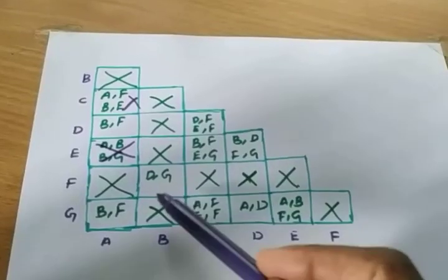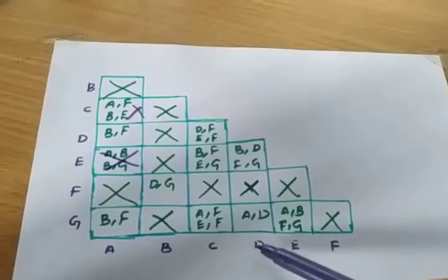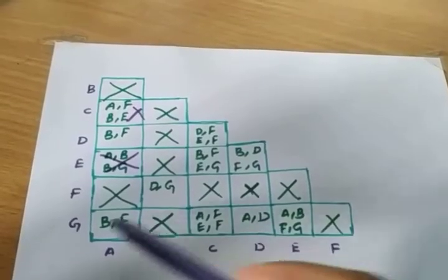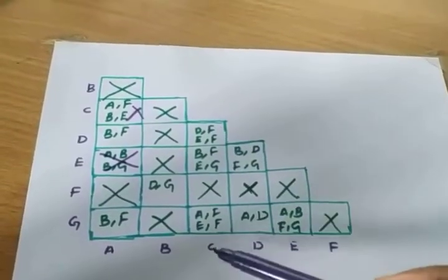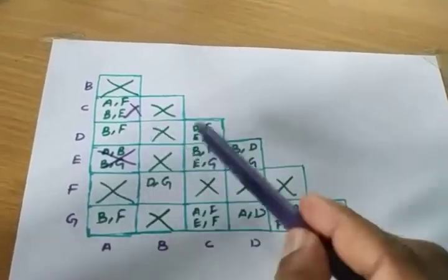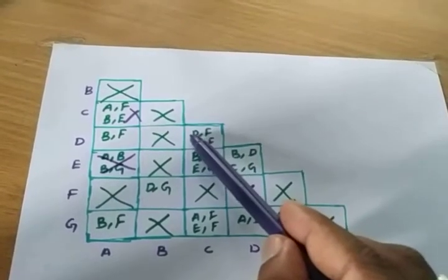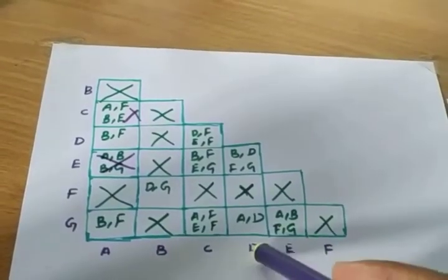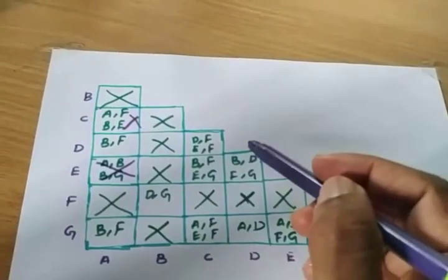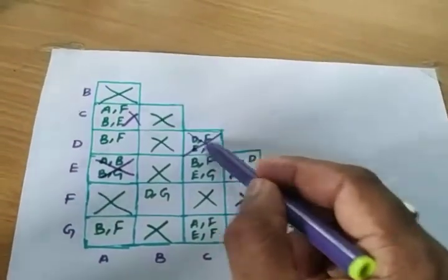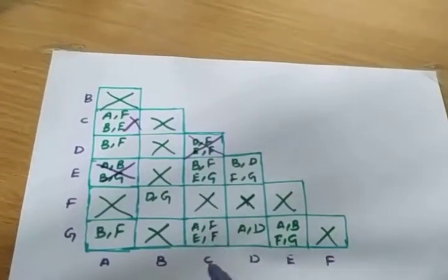Now the ABF column has entry DG. Check DG — D and G have no cross mark, so it is taken. Now consider the DC column — it has entry DF. DF is crossed, so we need to cross this column.